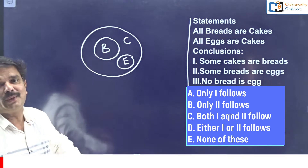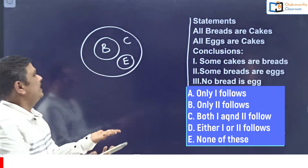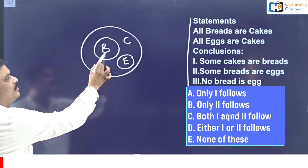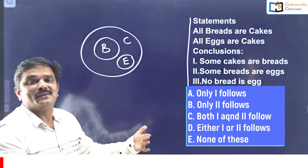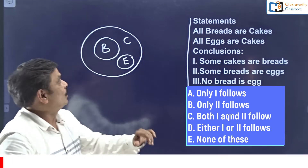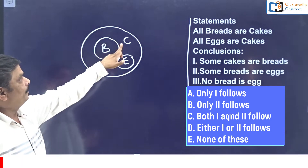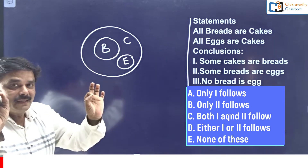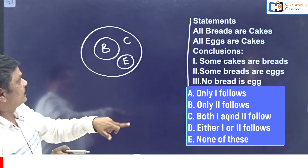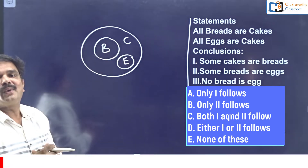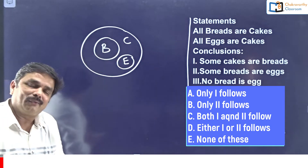This is a simple question. Now go for the first conclusion: Some cakes are reds. You see B is inside and C is outside - definitely, some cakes are reds is possible. By seeing this diagram, all B's are C's is correct, some B's are C's is also correct, and some C's are B's is also correct.